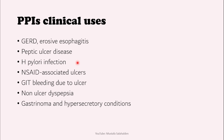PPIs are used for H. pylori infection as part of the treatment protocol. They help eradicate this bacteria because H. pylori thrives in an acidic environment, and PPIs decrease the acid, leading to eradication of the infection. They are also used for NSAID-associated ulcers — for patients with ulcers caused by NSAIDs, PPIs provide ulcer healing (and NSAIDs should be stopped if the patient has an ulcer). PPIs are also given as prophylaxis alongside NSAID use to prevent ulcer development.